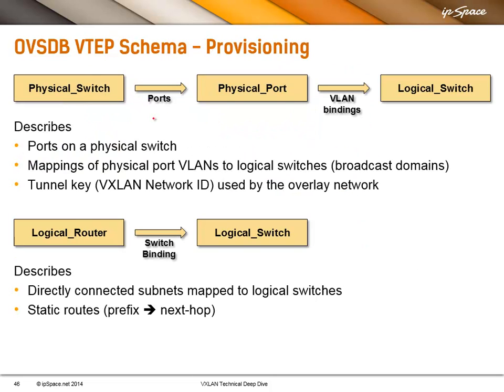Now let's walk slowly through the VTAP schema. The first table is the physical switch table. It defines all the physical switches that this hardware switch controller is responsible for. In Arista's case this would have multiple entries; in Juniper's case there would only be one entry.